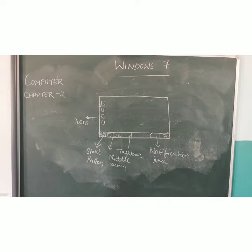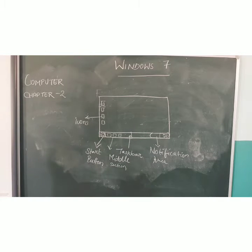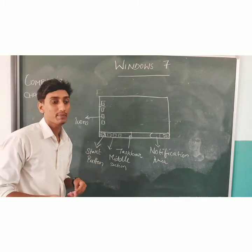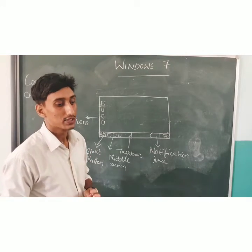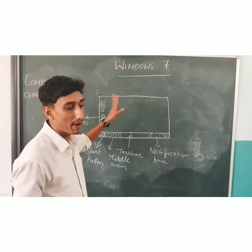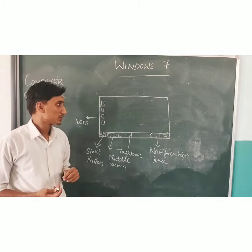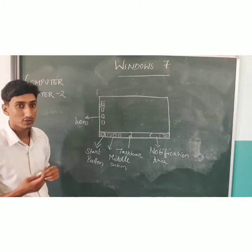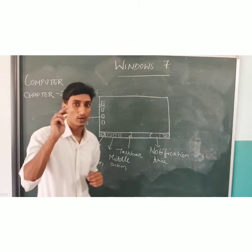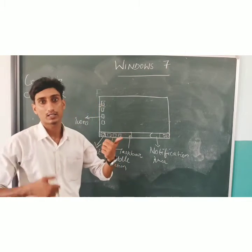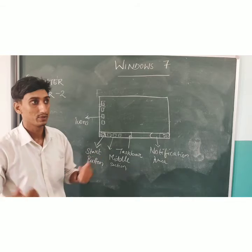You can change the background in Windows 7 and find different themes. Every mouse has two clicks: the first is left click and the other is right click. You click on the left side for left click and the right side for right click.